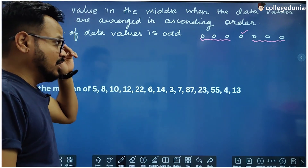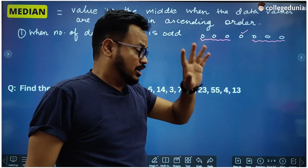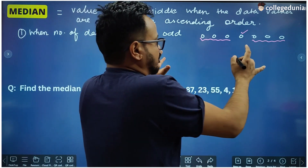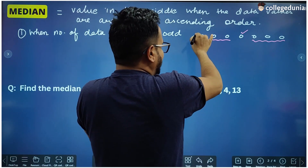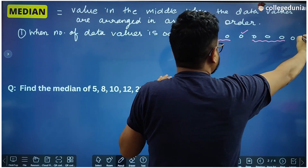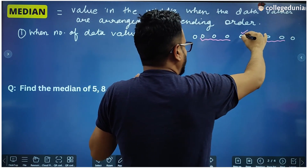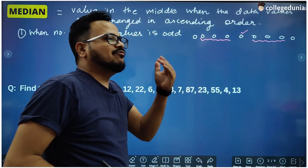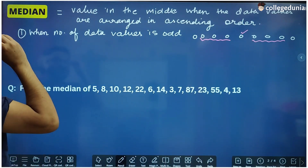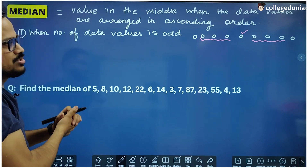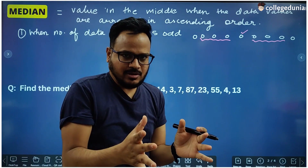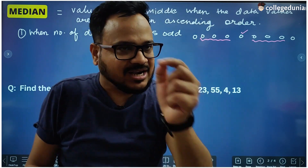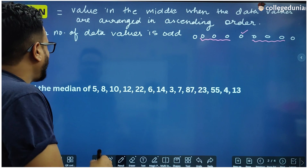That fourth value is appearing at the middle position, and whatever that value is, it will be the median of the data. Seven is an odd number. Now suppose there are nine data values — leave four from the left and four from the right, and the fifth value will be the median. So if the number of data values is odd, there will be only one value at the middle position.